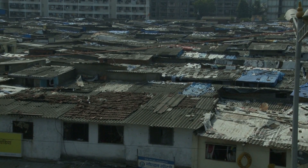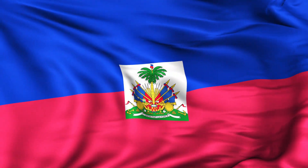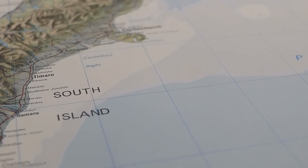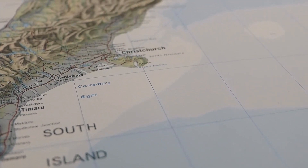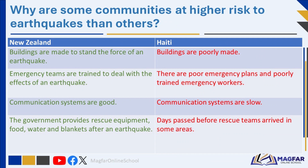Haiti is a less developed country whereas New Zealand is a more developed country. The earthquakes which took place in Haiti and New Zealand were about the same force, however the earthquake in Haiti did much more damage. In Christchurch, New Zealand, measures are in place to mitigate the impact of earthquakes: buildings are constructed to withstand seismic forces, emergency teams are well trained, communication systems are efficient, and the government provides rescue equipment, food, water, and blankets promptly after an earthquake.